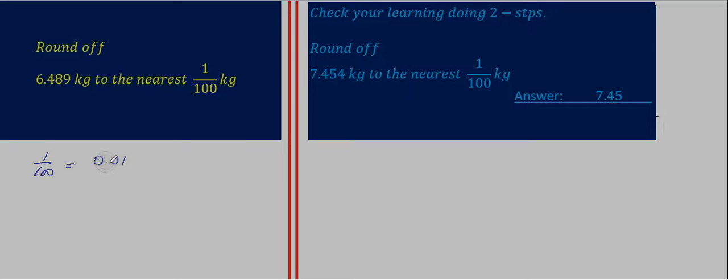Now we have to convert 6.489 to 0.01 precision, which means we have to place the number up to two decimal places, because the 1 is after two decimal places. So we can write 6.4...